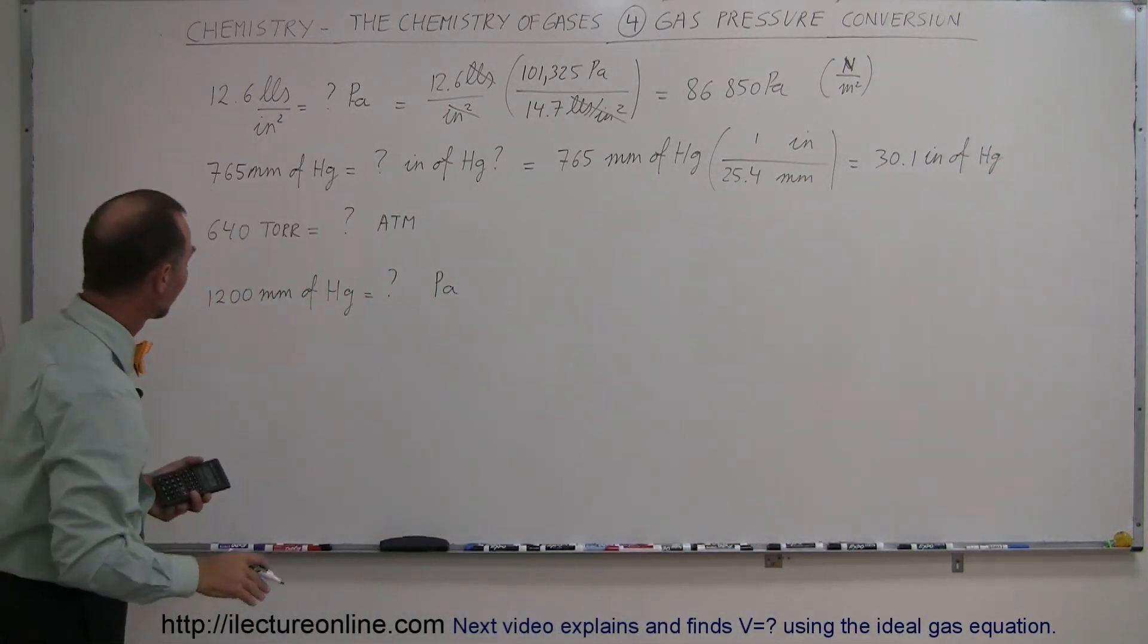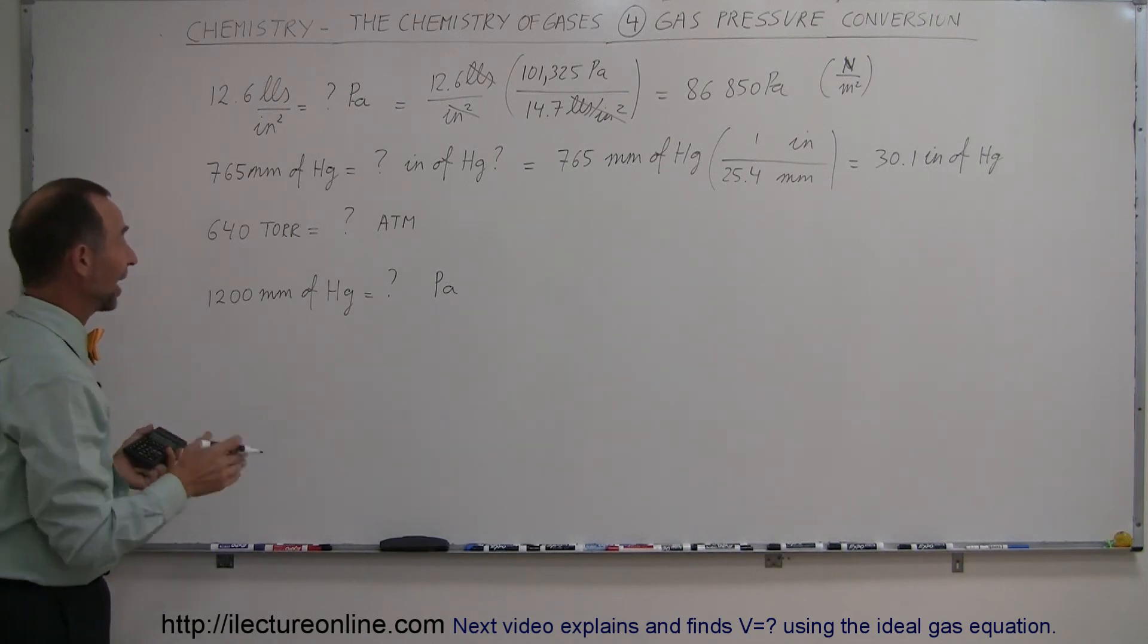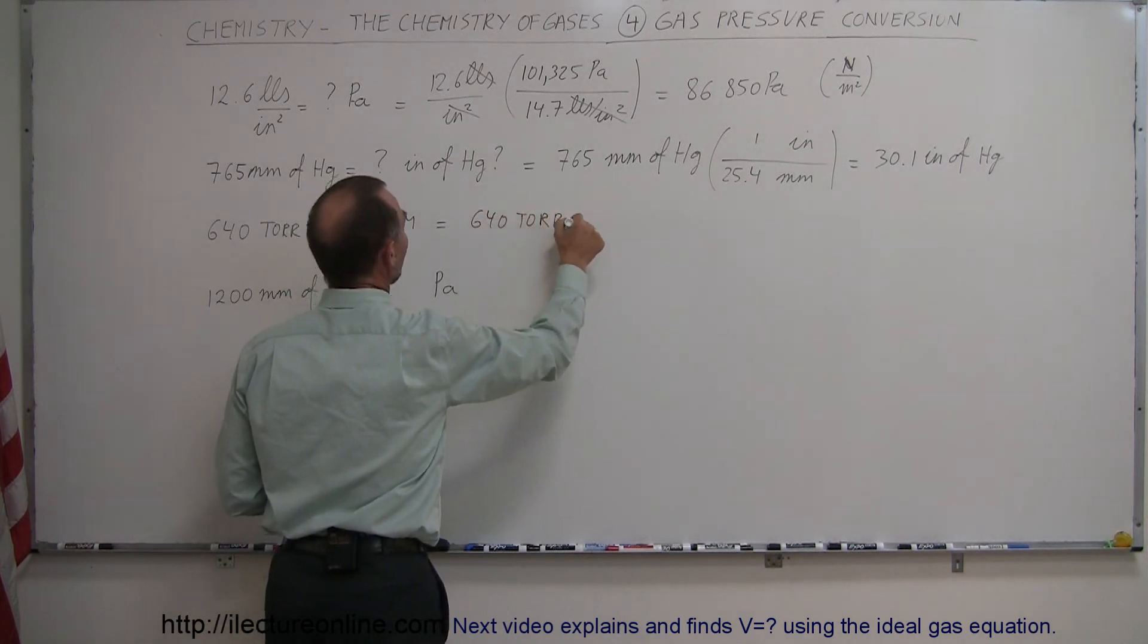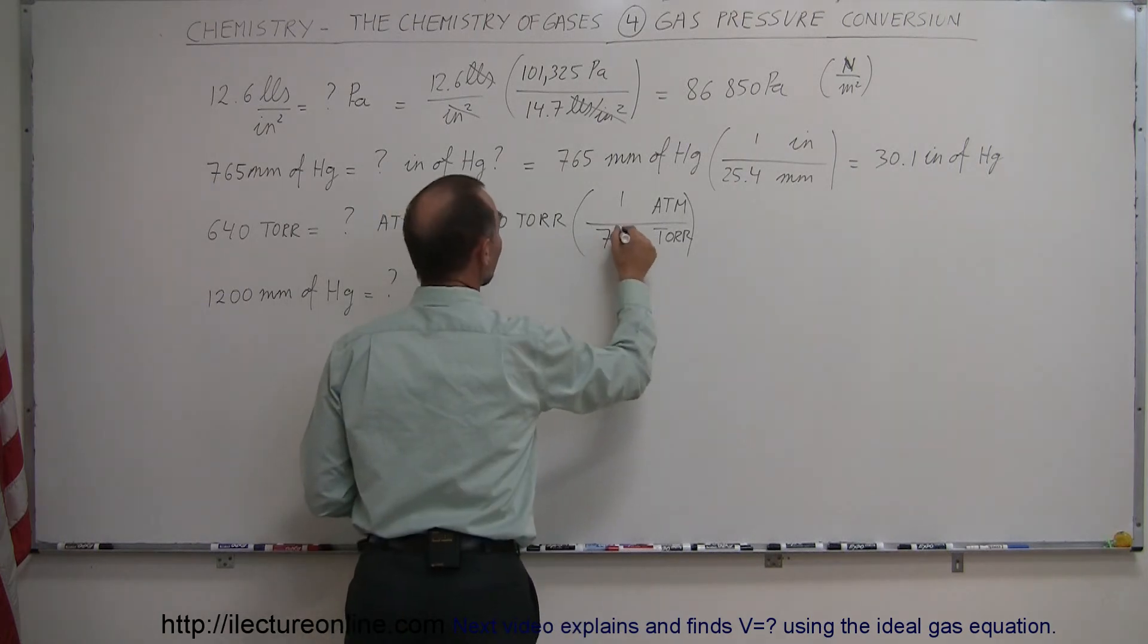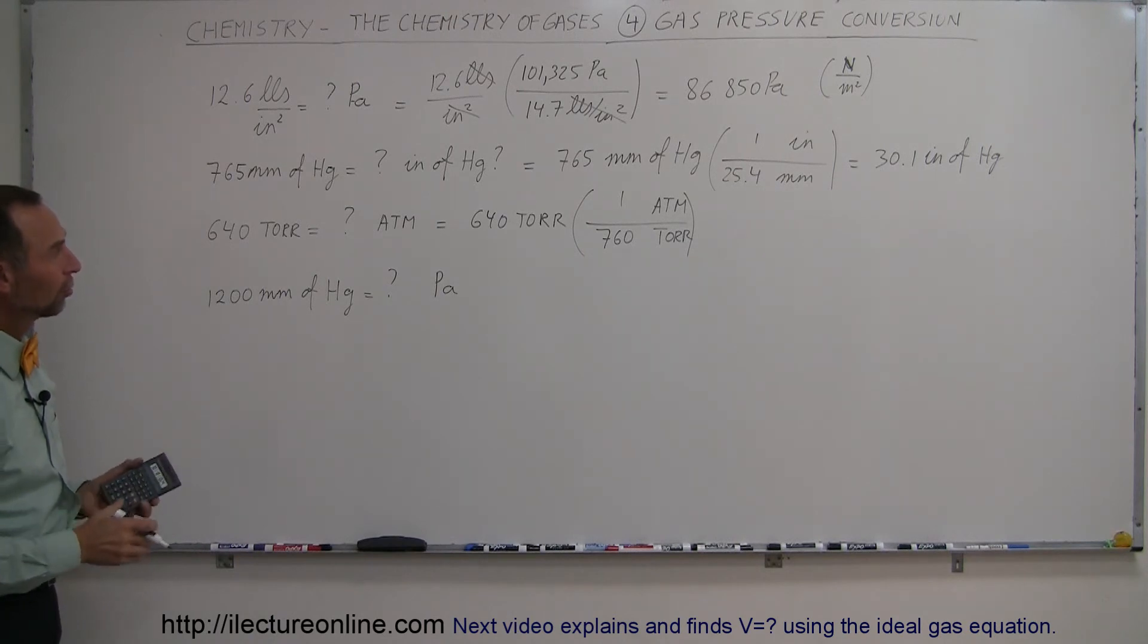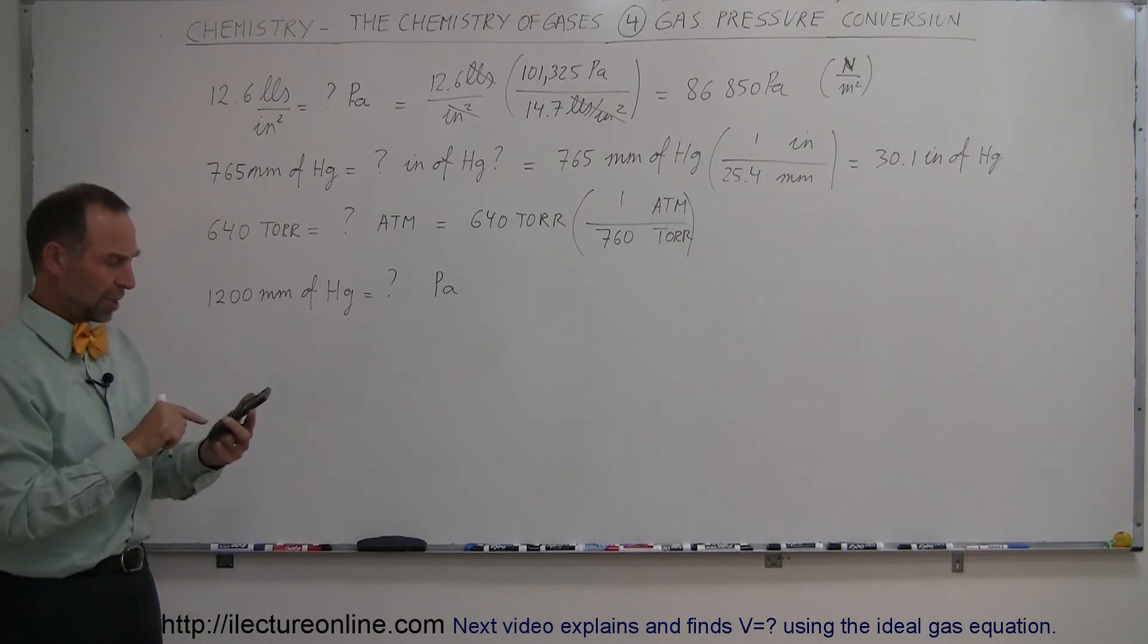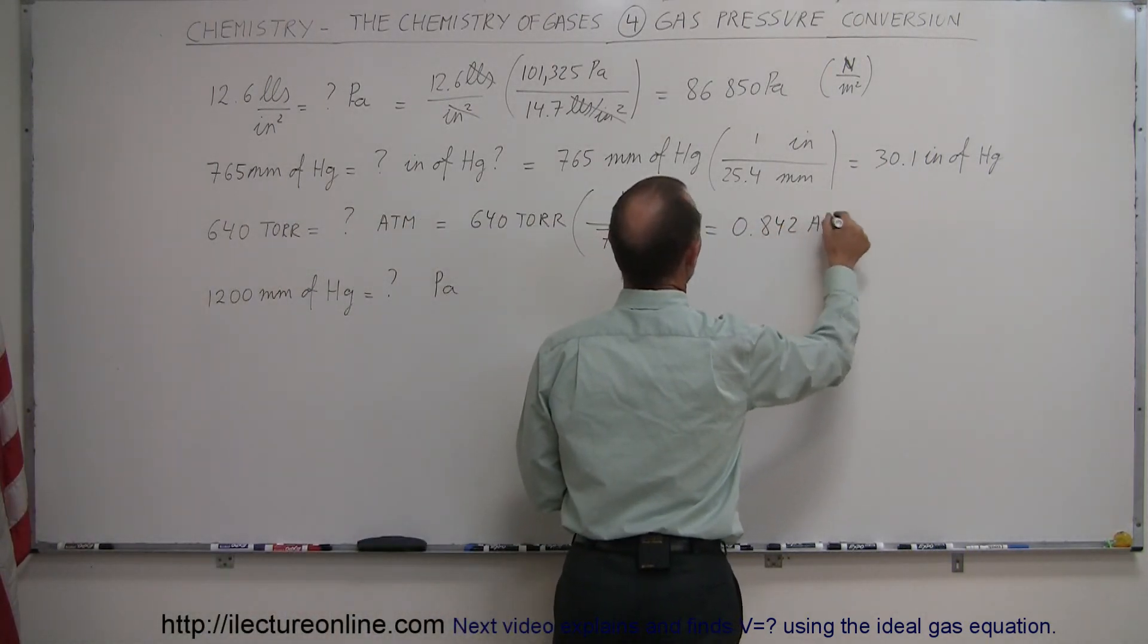All right, next, how about if they give it to you in torr? Remember, a torr and a millimeter of mercury is exactly the same. So we can say this is equal to 640 torr. And then do the conversion. We want atmospheres and torr at the bottom. So torrs will cancel out, and one atmosphere is 760 torr. Remember that one millimeter of mercury is the same as one torr, named after Torricelli. So divide 640 by 760, and you get everything in terms of atmosphere. So 640 divided by 760, and we get 0.842, so 0.842 atmospheres.